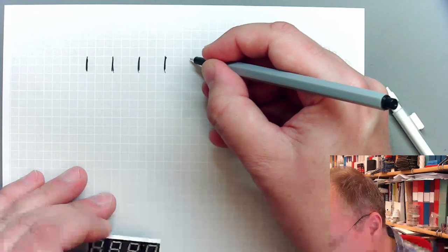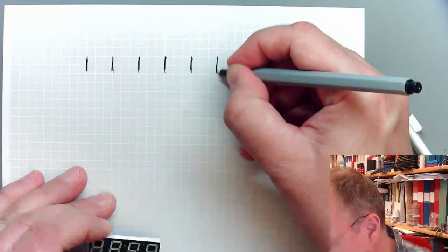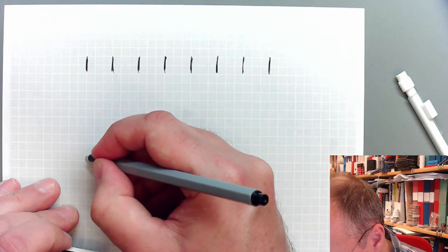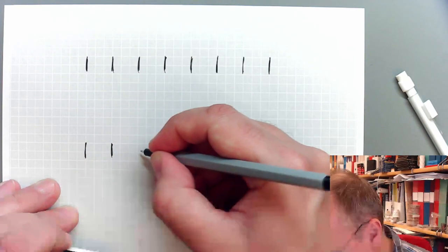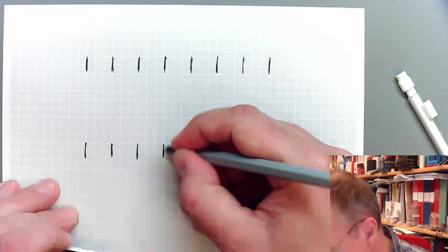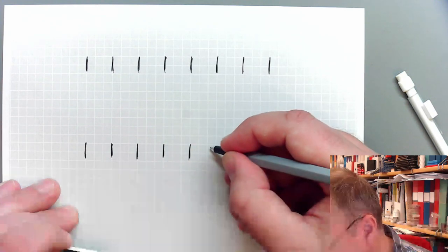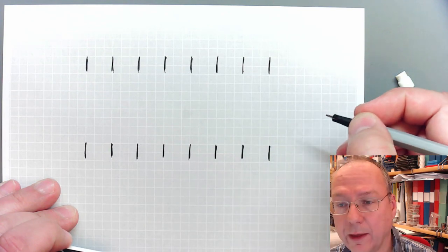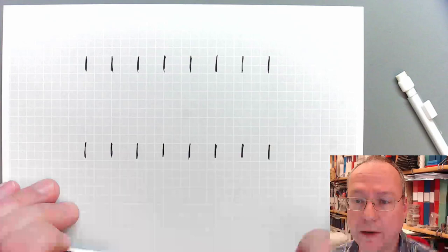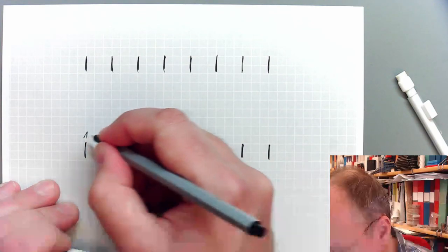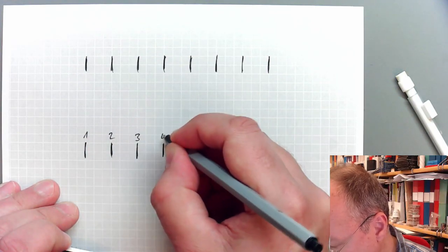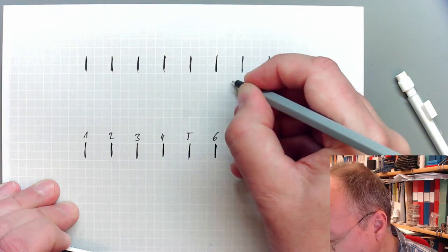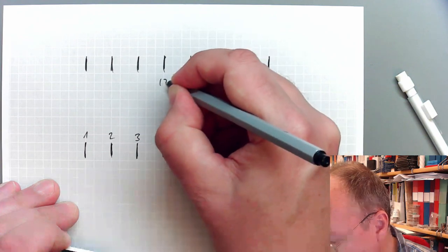So we have 16 pins, eight on either side. So these were four, five, six, seven, eight on this side, and then we have one, two, three, four, five, six, seven, eight on the other side as well. In this standard numbering of integrated circuits, it would be pin number one, two, three, four, five, six, seven, eight, nine, ten, eleven, twelve, thirteen, fourteen, fifteen, and sixteen.